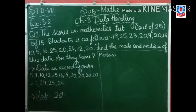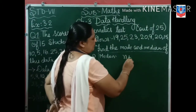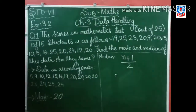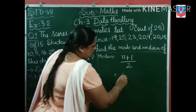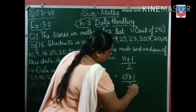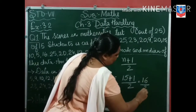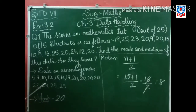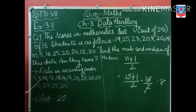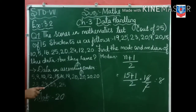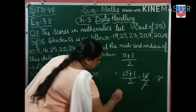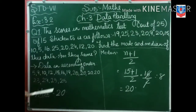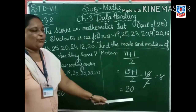Now, median. The formula to find median is N plus 1 divided by 2, where N is the number of observations. There are 15 observations. So 15 plus 1 by 2 equals 16 by 2, which equals 8. So our 8th observation is the median. Counting from the arranged data: 1, 2, 3, 4, 5, 6, 7, 8 — median is 20. Are they the same? Yes. Mode is 20 and median is also 20.